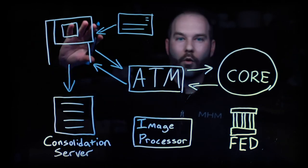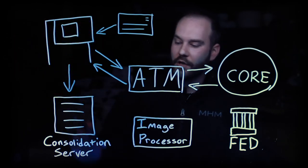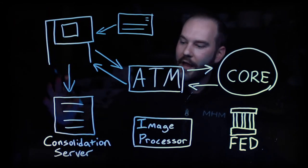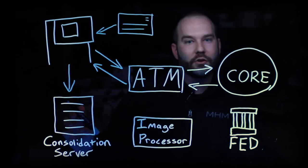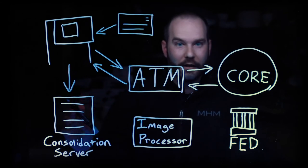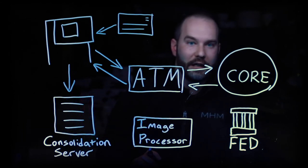So if you have one machine or a hundred machines, this consolidation server can take all of that data, suck it into the server and consolidate it and process it in the way that your imaging processor needs.